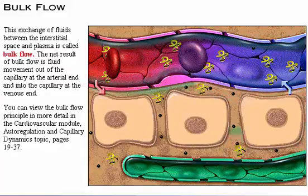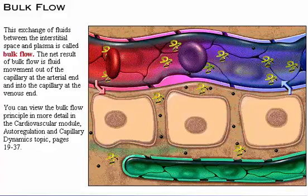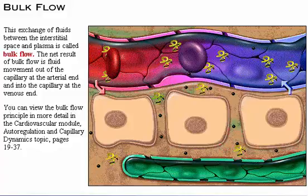This exchange of fluids between the interstitial space and plasma is called bulk flow. The net result of bulk flow is fluid movement out of the capillary at the arterial end and into the capillary at the venous end. This process allows for nutrient and waste exchange.